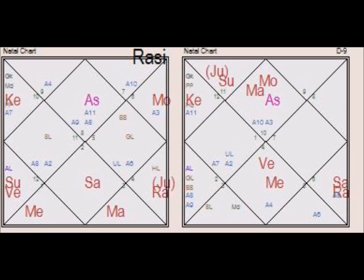As you know, Sage Jaimini was the second-generation astrologer or sage after Sage Parashar, and much after Sage Bhrigu. His sutras and principles mainly focus on the Navamsa chart. He does give importance to the main Rashi chart, but he has done a lot more research on the Charakarakas — the movable significators — and he does his analysis based on the Charakarakas in the Navamsa chart.